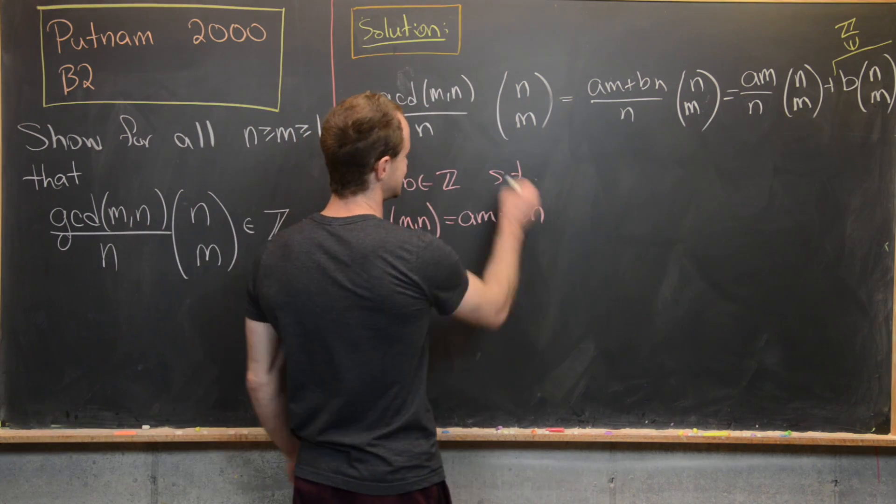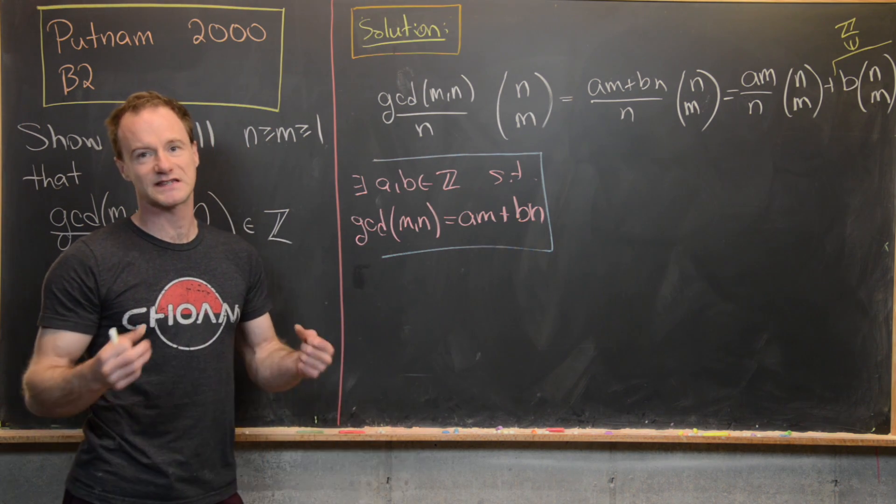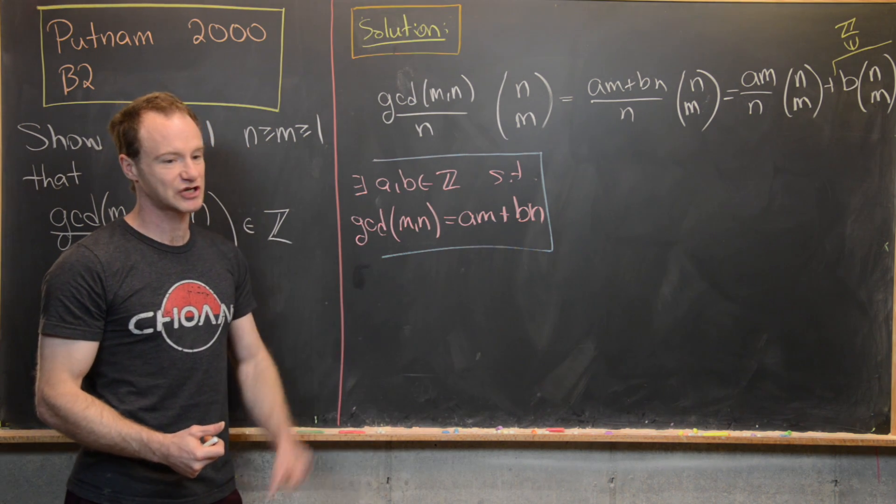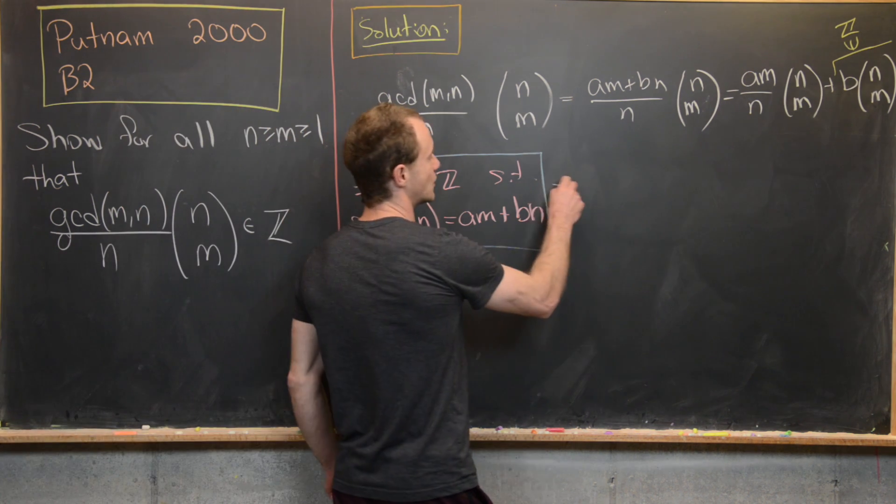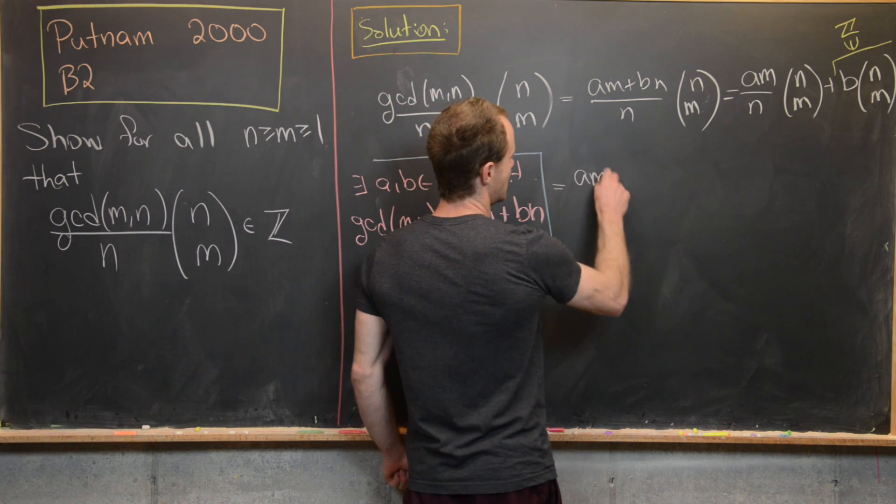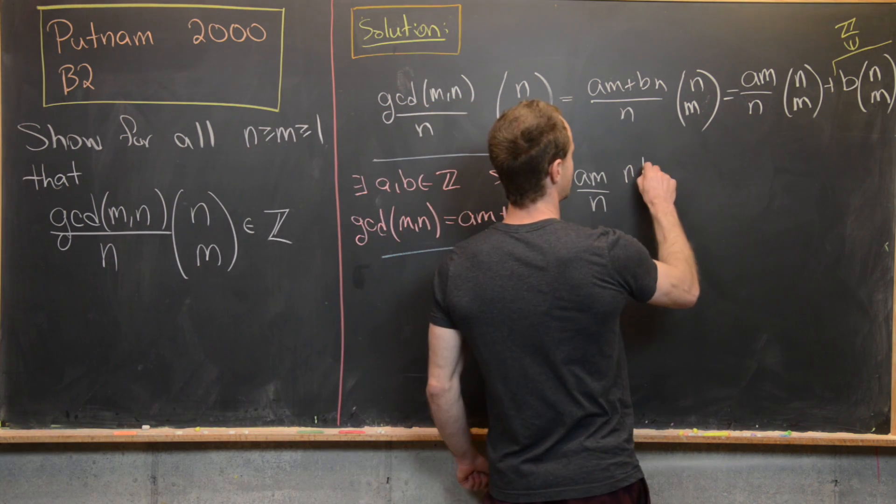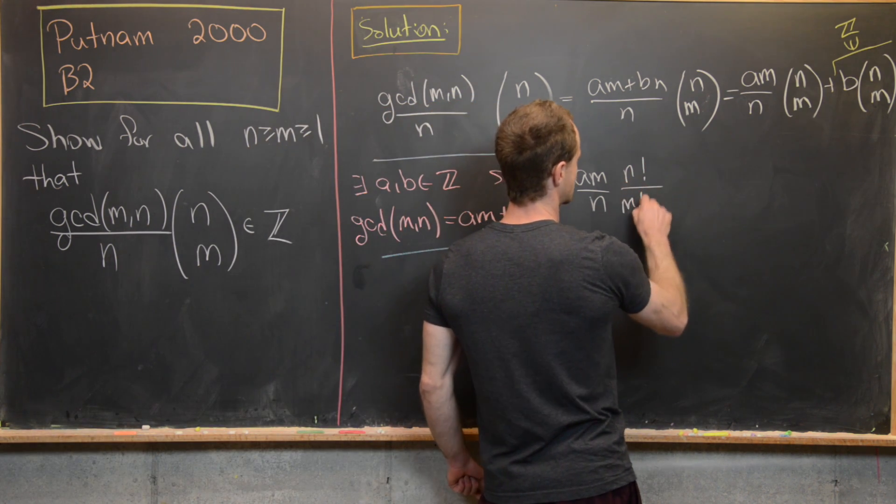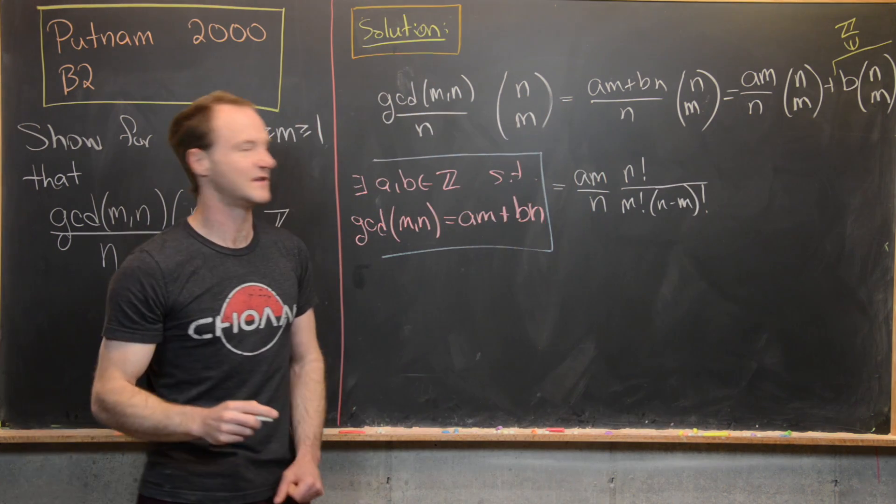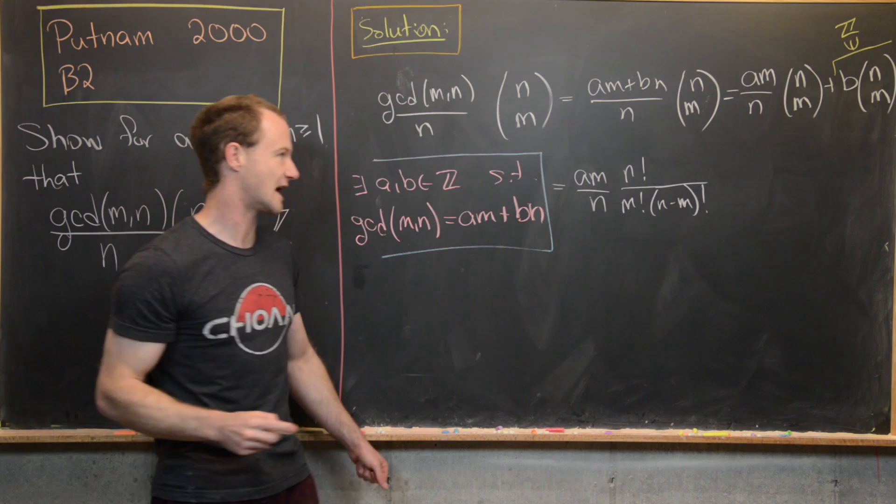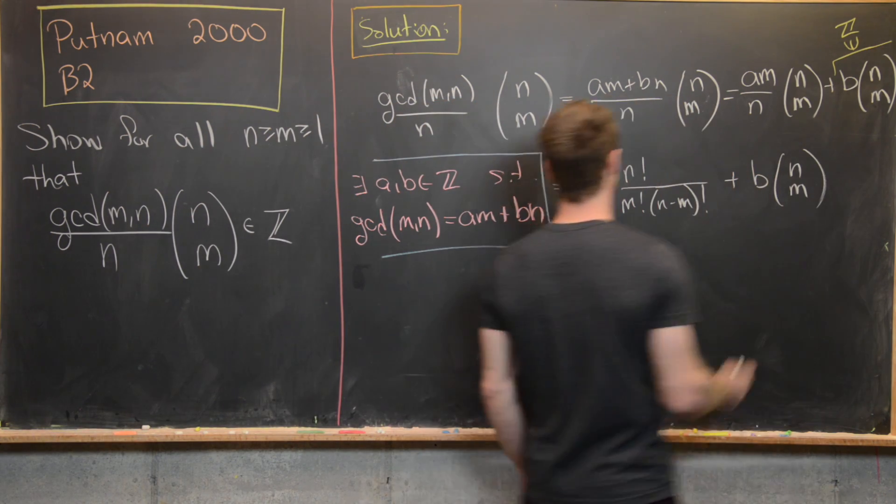And so there's a standard binomial coefficient identity that will allow you to do this in one step. But let's skip that and just use the definition of a binomial coefficient to simplify this left-hand term. So we're going to have am/n. And then we can write (n choose m) as n!/(m! × (n-m)!). So that's the definition of a binomial coefficient among natural numbers. And then I'm just going to keep this guy as b × (n choose m).